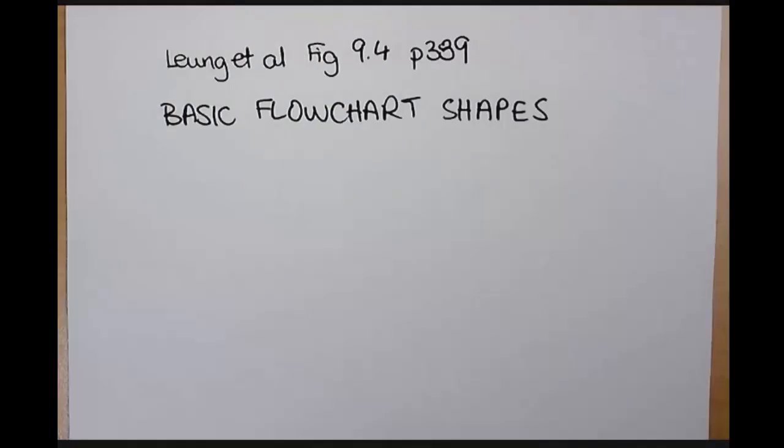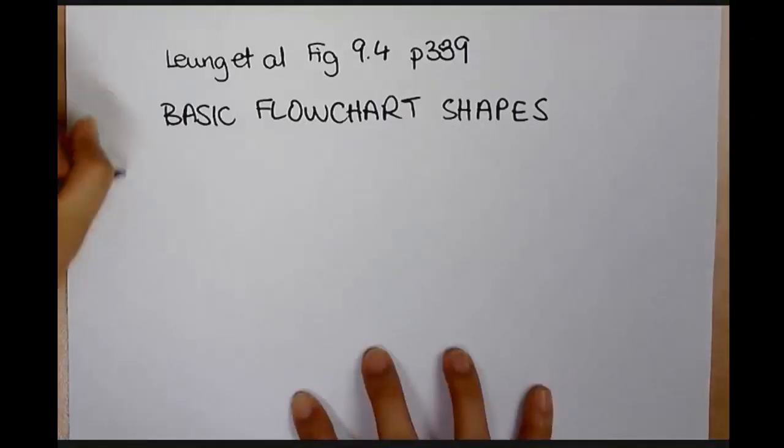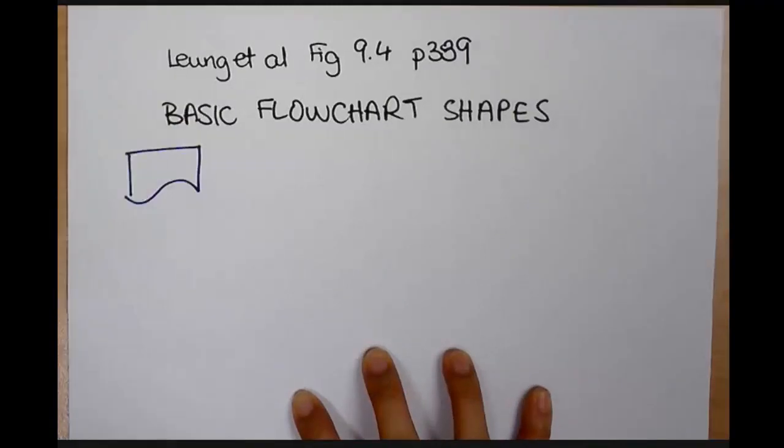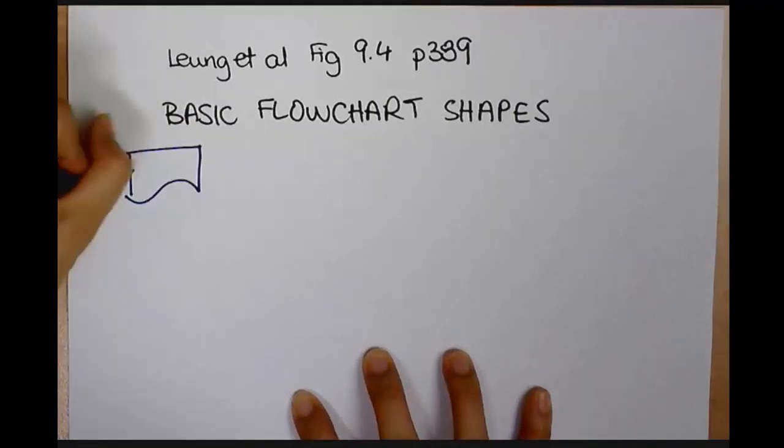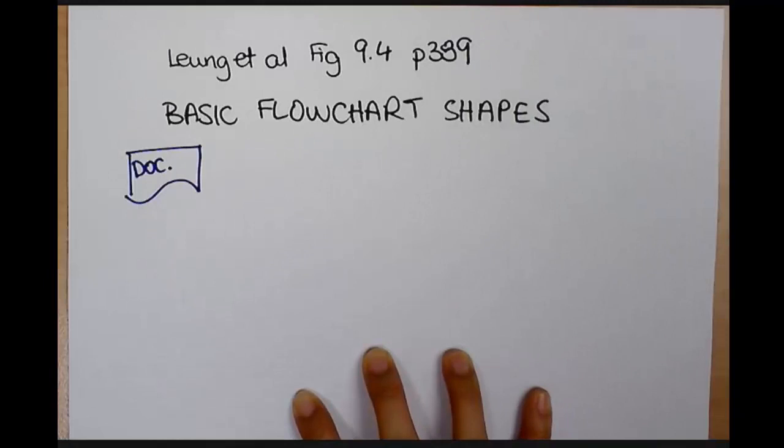Okay, so what sort of shapes are we going to start off with? And you'll notice that there are a number of different shapes in the actual figure 9.4. I'm going to talk about the main ones that we use in flowcharting. So the first one I'm going to talk about is that shape there.